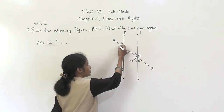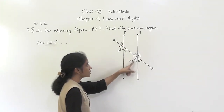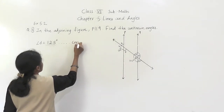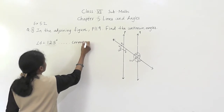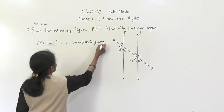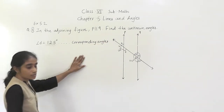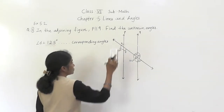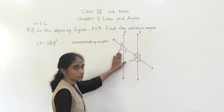This angle and this angle are corresponding angles. Suppose this is angle 1. This angle and this angle are corresponding angles. So here we write corresponding angles property. Which property is used here? Corresponding angles property.